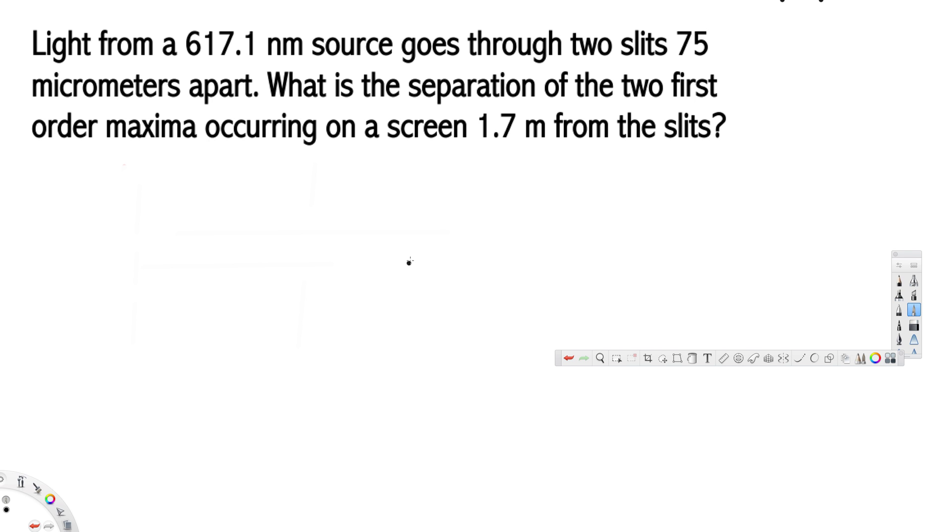Let's look at this problem. The question is asking: light from a 617.1 nanometer source goes through two slits 75 micrometers apart. What is the separation of the two first order maxima occurring on a screen 1.7 meters from the slits?